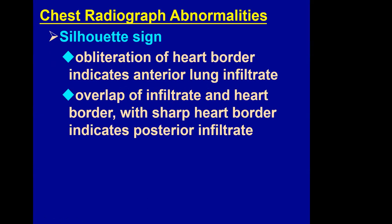Let's look at some abnormalities seen on a chest radiograph. First is the silhouette sign. The silhouette sign involves obliteration of the heart border — if the heart border is obliterated and you can't see it on the radiograph, it means there is a lung infiltrate located anterior to the heart. If the heart border is clearly visible despite an infiltrate, that infiltrate lies posterior to the heart.